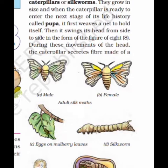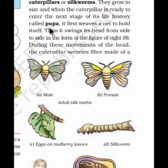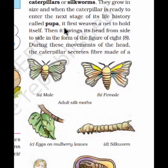The female silk moth lays eggs from which larvae hatch — these are called caterpillars or silkworms. The female moth lays eggs and caterpillars are produced. They grow in size, and when the caterpillar is ready to enter the next stage of its life history, called pupa, it first weaves a net to hold itself.